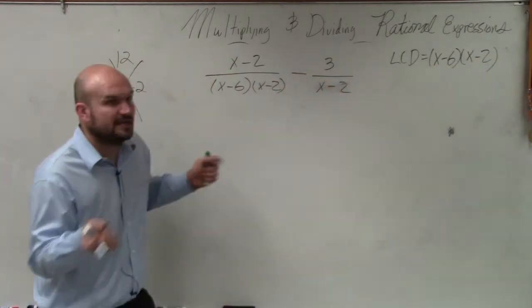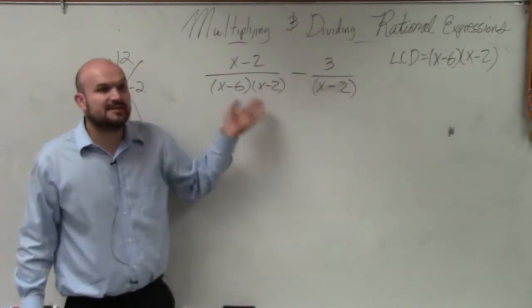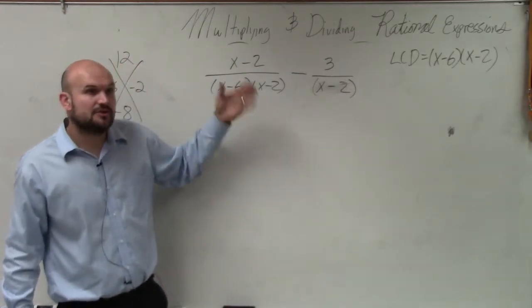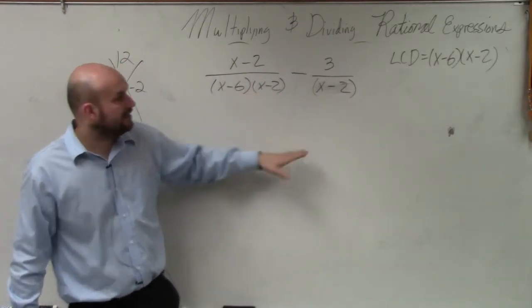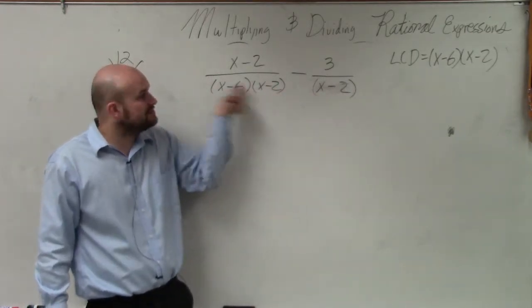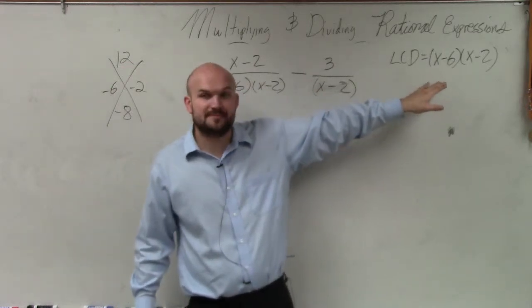The LCD is, if you look at both denominators, they share x minus 2. They share x minus 2. So they both have x minus 2. Now they both need x minus 2 times x minus 6 to be in common. So that's why your LCD is x minus 6 times x minus 2.